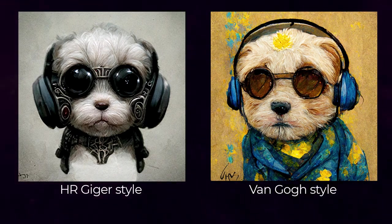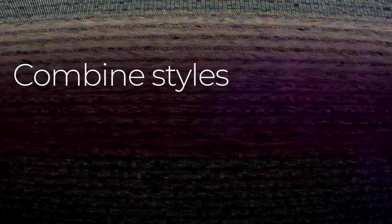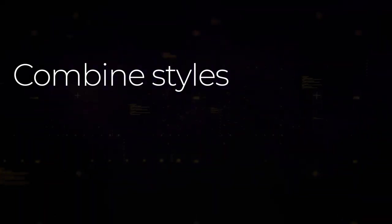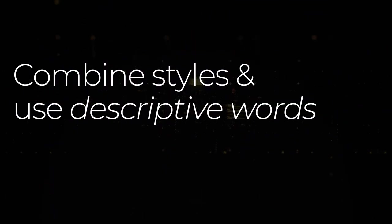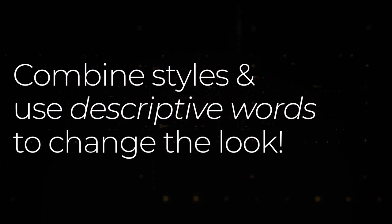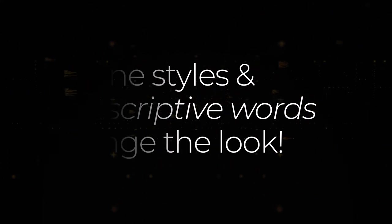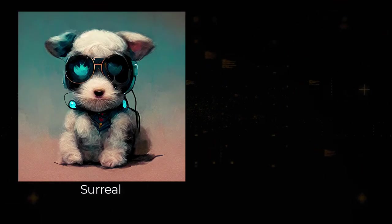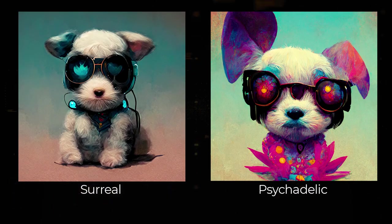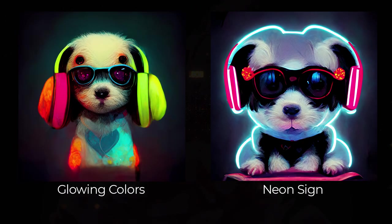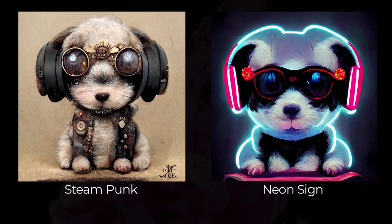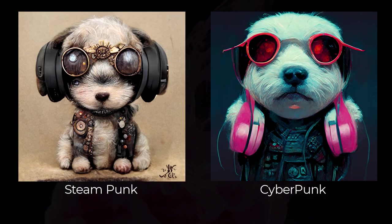I recommend combining some of these styles to get good results. Also use descriptive words and phrases that can help change the look as well. With these ones I've decided to add in some basics like 'surreal' or 'psychedelic,' or bring the colors to life by saying things such as 'glowing colors' or 'neon sign.' You can also pick a visual style such as steampunk or cyberpunk if you want to theme it up a bit.